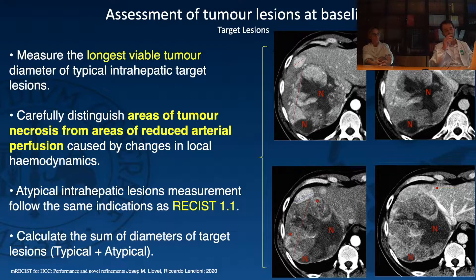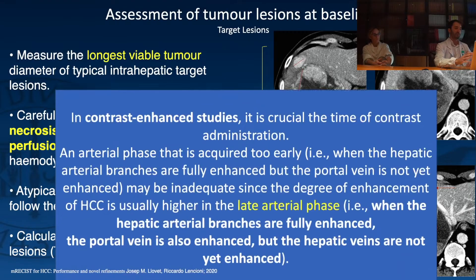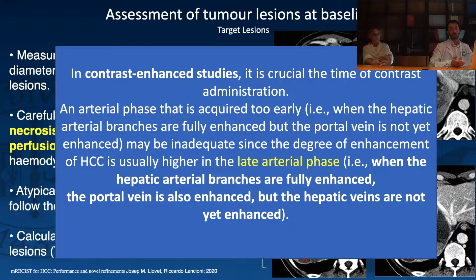In target lesion assessment with mRECIST, you always measure the longest diameter of the viable part. It is critical to continue measuring the viable part after treatment. A less-enhanced lesion does not mean the treatment is working and you stop measuring — reduced enhancement can be due to hemodynamic changes after treatment. The lesion is still there. You must use the correct contrast timing: a late arterial phase where the portal vein is also enhancing and the hepatic arterial branches are visible, but the hepatic veins are not yet enhanced.